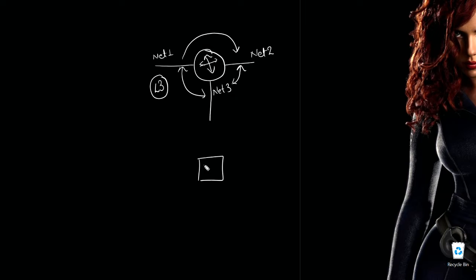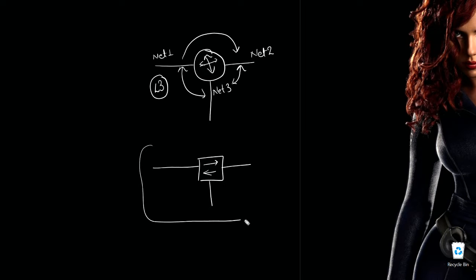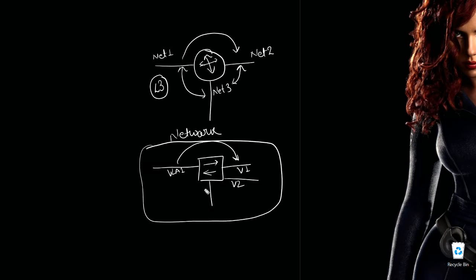Similarly, with a switch — if we have a switch and different VLANs, the traffic is sent within the same network. The switch sends packets within the same VLAN. For example, if two ports are on VLAN 1, traffic flows between them, but ports on VLAN 2 only communicate with each other. That's what happens at Layer 2.